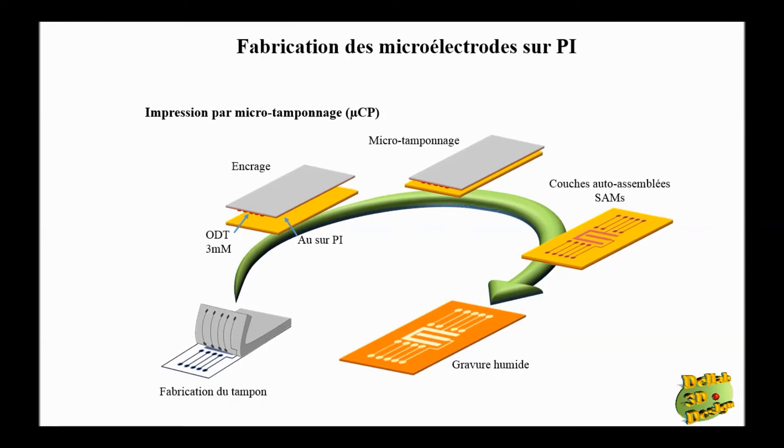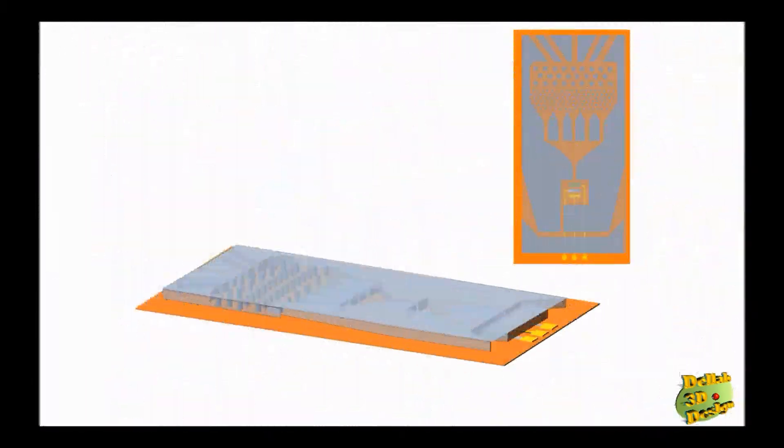So here we have all process of fabrication also presented in 3D dimension. The process of fabrication of micro electrodes onto polymer substrate. And here we have another kind of microfluidic system, laboratory on chip.